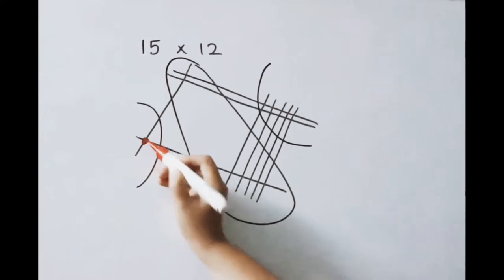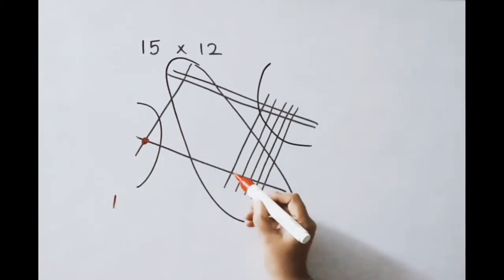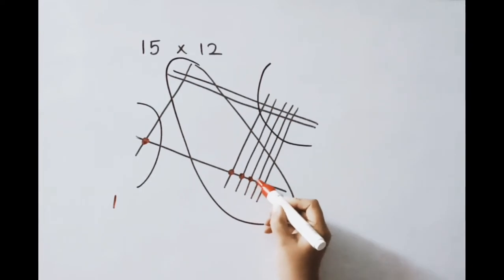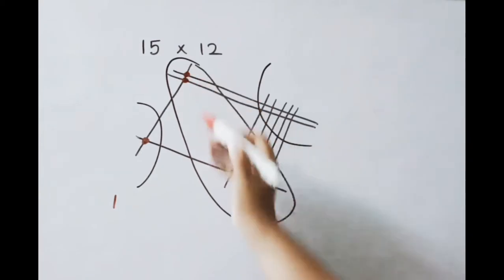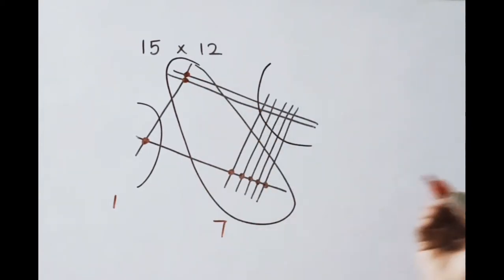Count here how many were there? 1. Count here how many were there? 1, 2, 3, 4, 5, 6, 7. Write on 7.